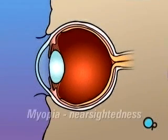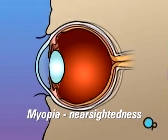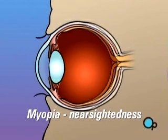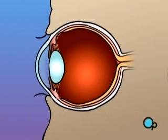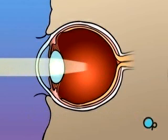Myopia, or nearsightedness, occurs when the shape of the eye is too long or the curve of the cornea is too extreme. In this case, light rays are focused on a point in front of the retina, instead of on the retina itself.